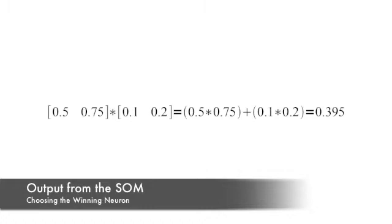The output from each of the individual neurons is calculated in a way that is very similar to how we calculated outputs for the feedforward neural networks. We use the dot product and the weight matrices to come up with an actual output value for each of the neurons. Here you see the output value being calculated for one neuron. We also look at all of the neurons and choose the winning neuron with the highest value.